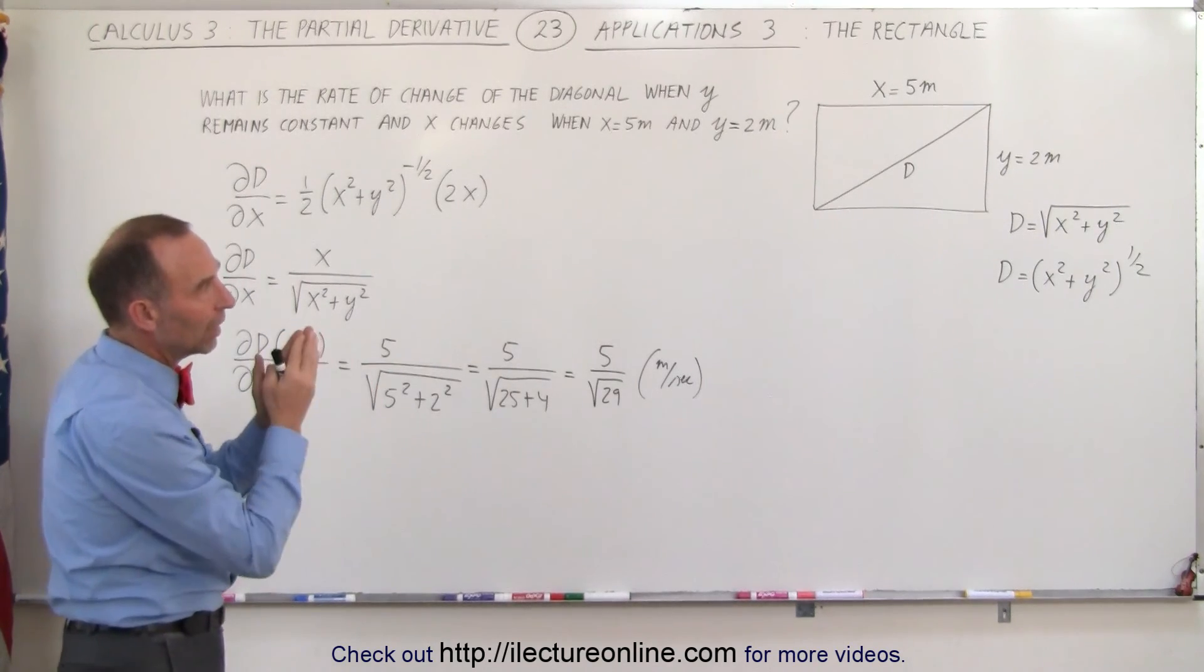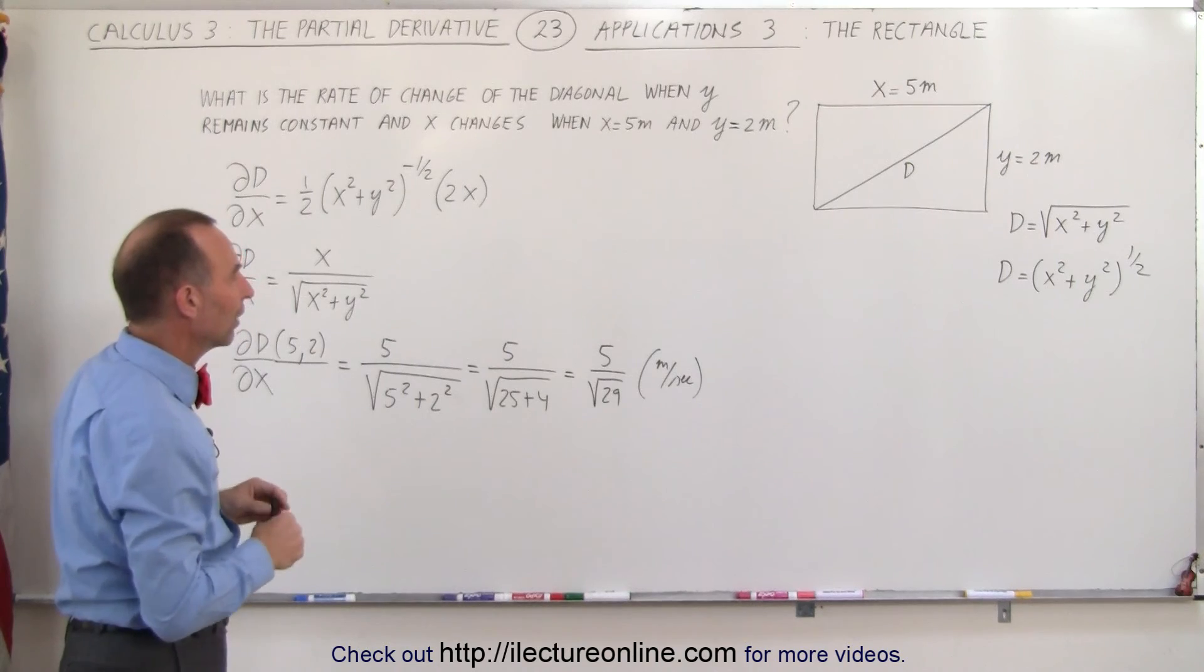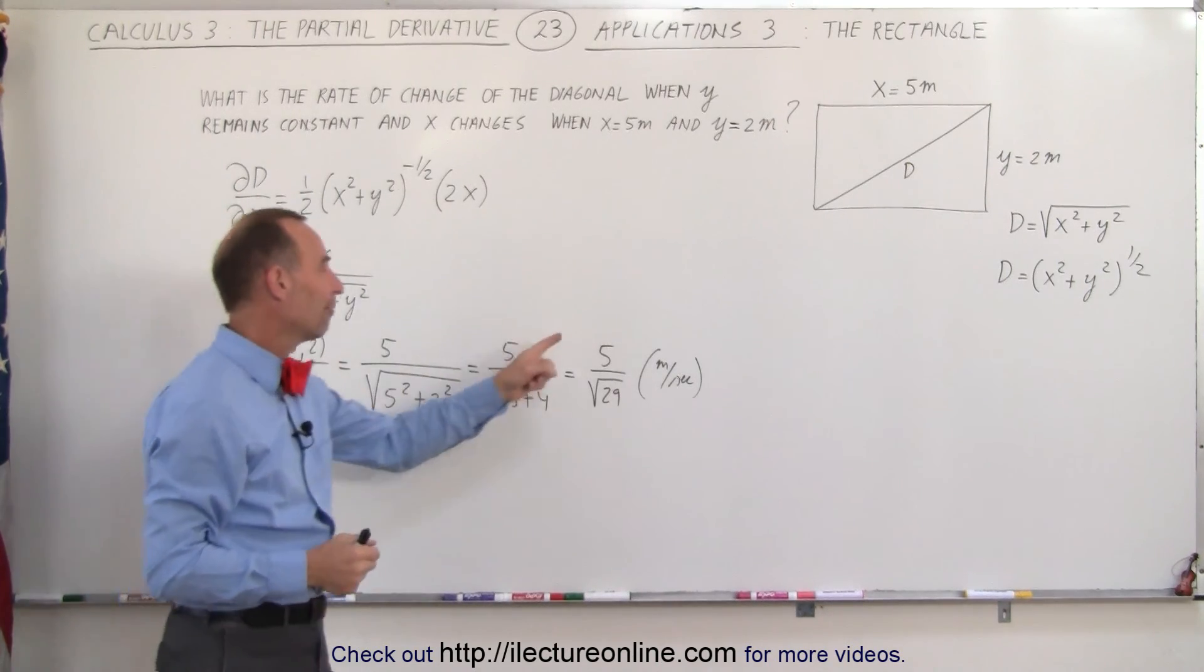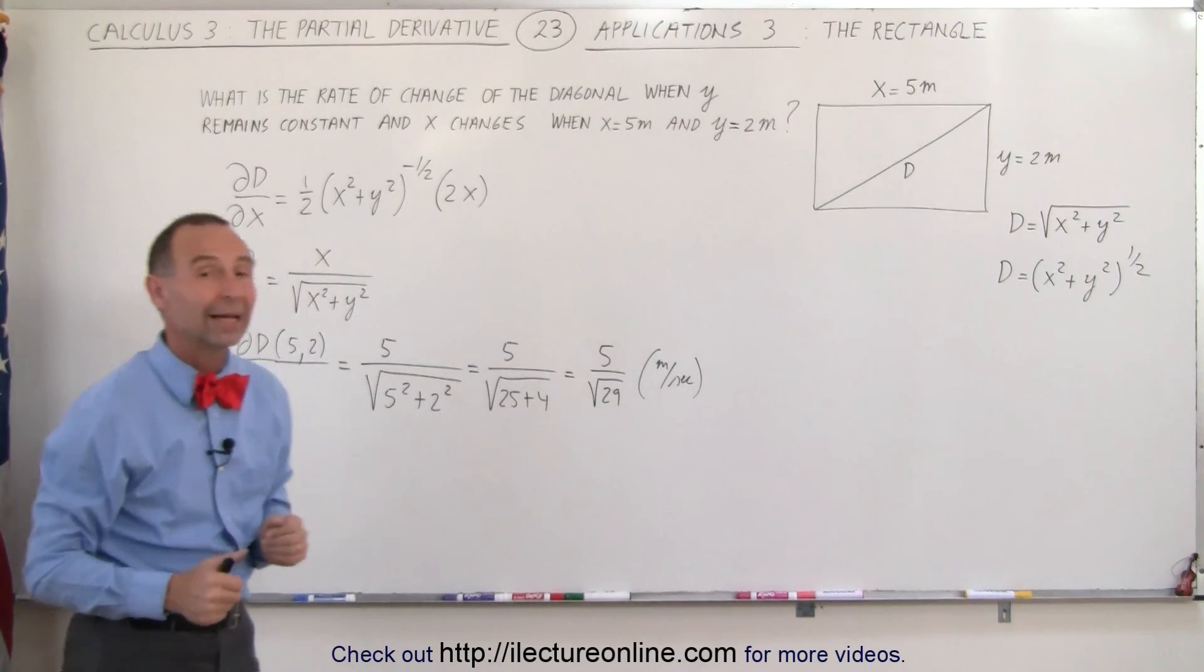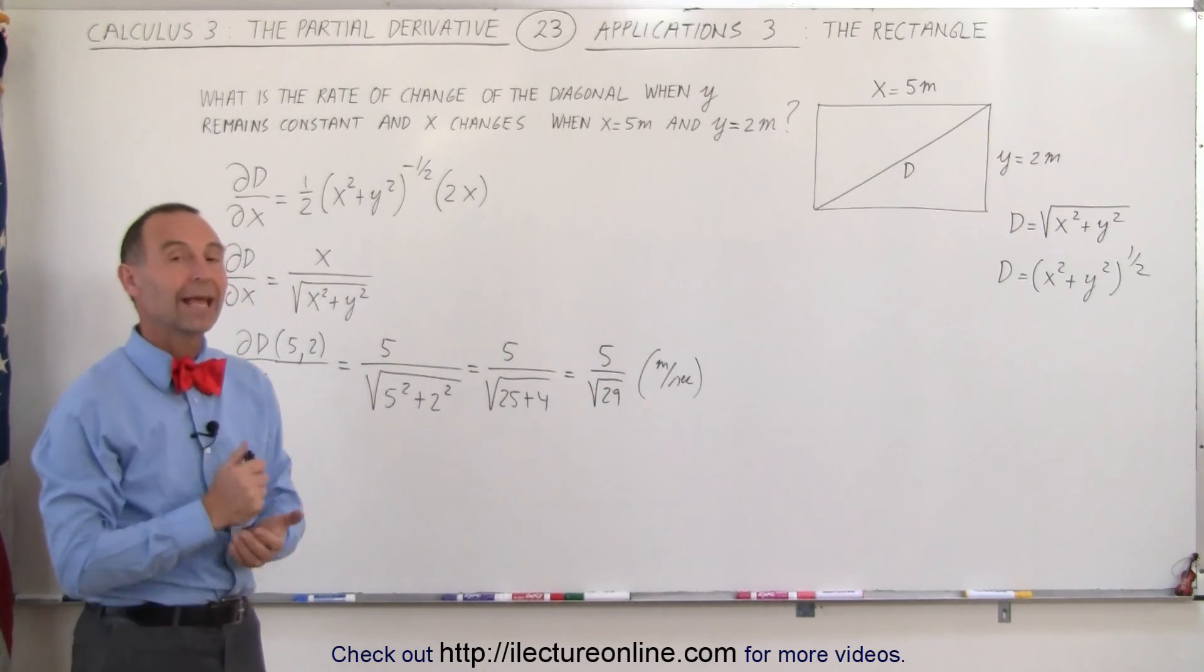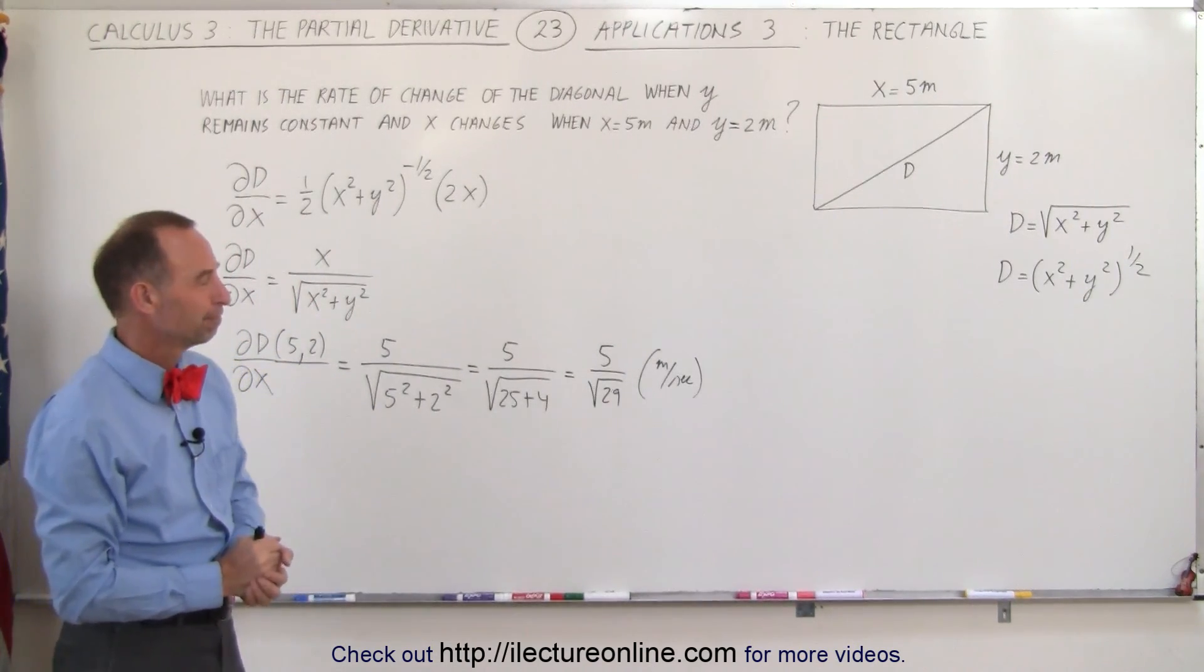keeping y constant and allowing x to change. So for every unit of change for x, we have 5 divided by the square root of 29 units to change for the diagonal. And that's how it's done.